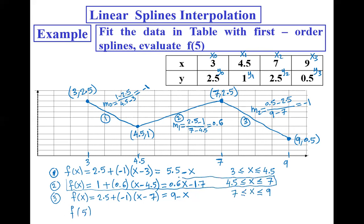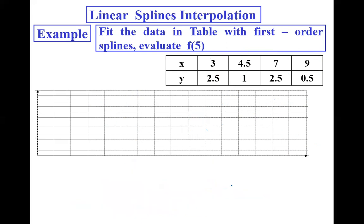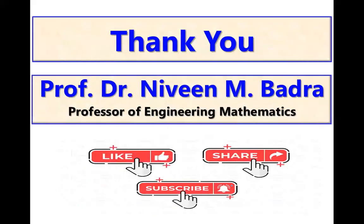To evaluate f(5): since 5 is in the interval [4.5, 7], we use the second spline: f(5) equals 0.6 times 5 minus 1.7, which equals 1.3. So f(5) equals 1.3. Thanks for watching this video — I hope it was very interesting and clear for you.